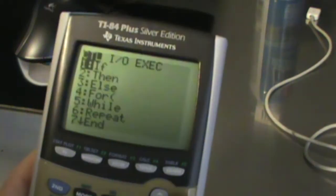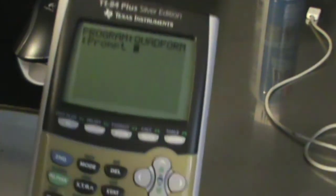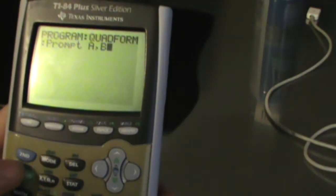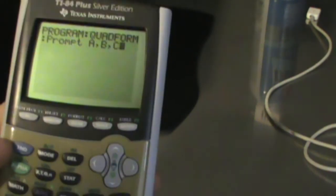Alright, first thing we're going to do is hit program, go to prompt under display, prompt. We're going to prompt A, comma, prompt B, comma, and we're going to prompt C, enter.